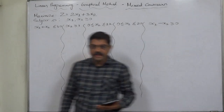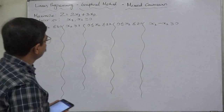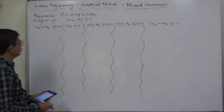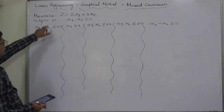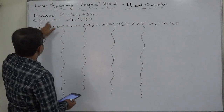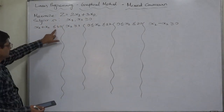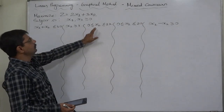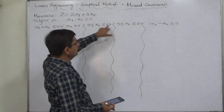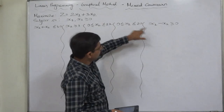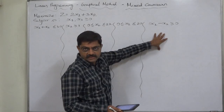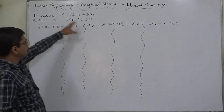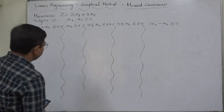Namaskar. A new case in linear programming solution through the graphic method — again a case with mixed constraints, a very interesting case. Maximize Z equals 2x1 plus 3x2, subject to: x1 plus x2 less than or equal to 30; x2 greater than or equal to 3; 0 less than or equal to x2 less than or equal to 12; 0 less than or equal to x1 less than or equal to 20; x1 minus x2 greater than or equal to 0; and x1, x2 are non-negative.